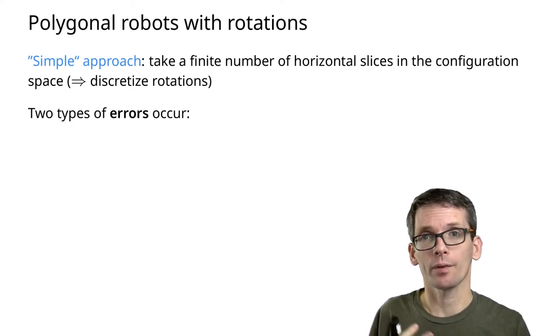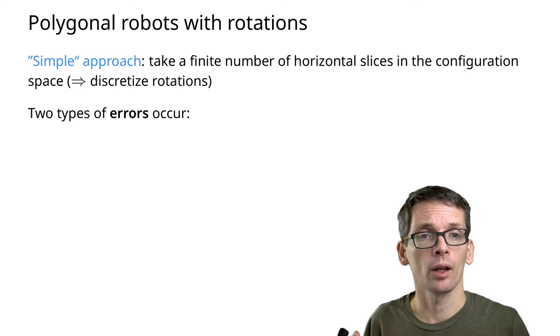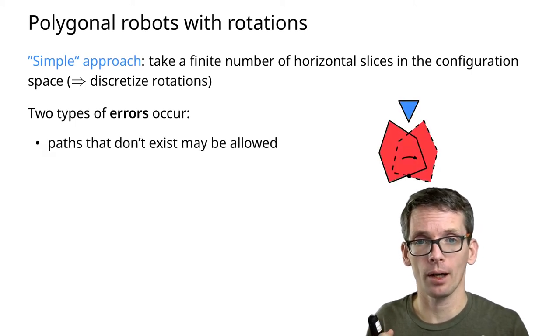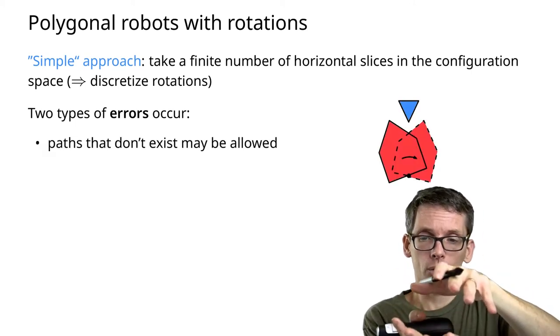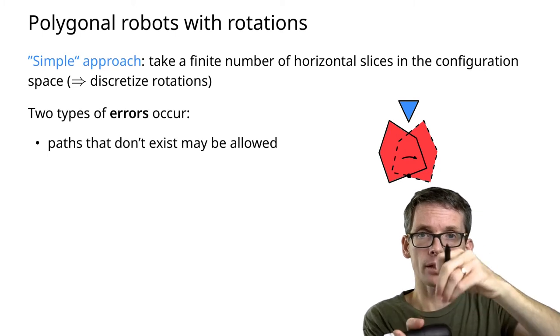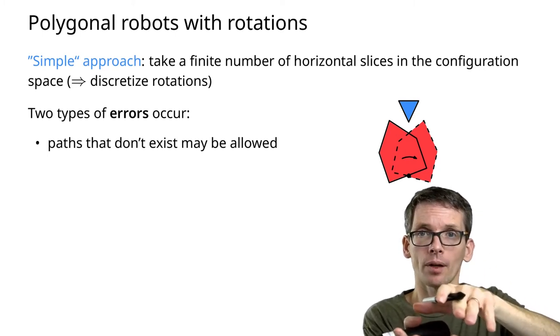First of all, and this is a more dangerous error, the following might happen. I might have two slices where in the overlay I see an intersection. But if I connect them,